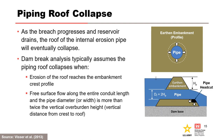As the breach progresses and the reservoir drains, the roof of the internal erosion pipe will collapse. Dam break analysis typically assumes the piping roof collapses when one of two conditions occur: erosion of the roof reaches the embankment crest profile, or free surface flow along the entire conduit length and the pipe diameter or width is more than twice the vertical overburden height — the vertical distance from crest to roof. The latter is illustrated by the figure on the lower right from the WinDAM C software documentation.